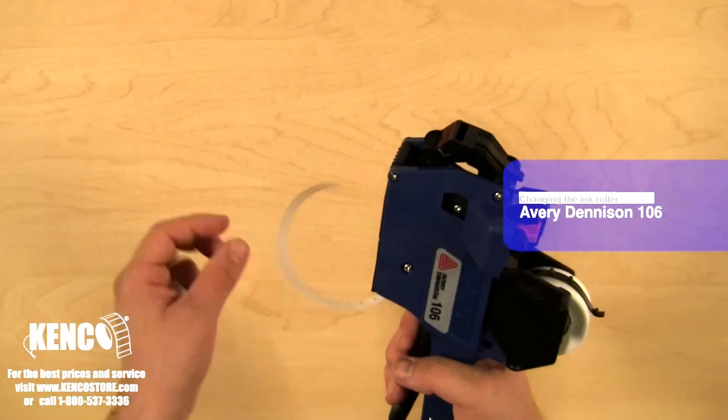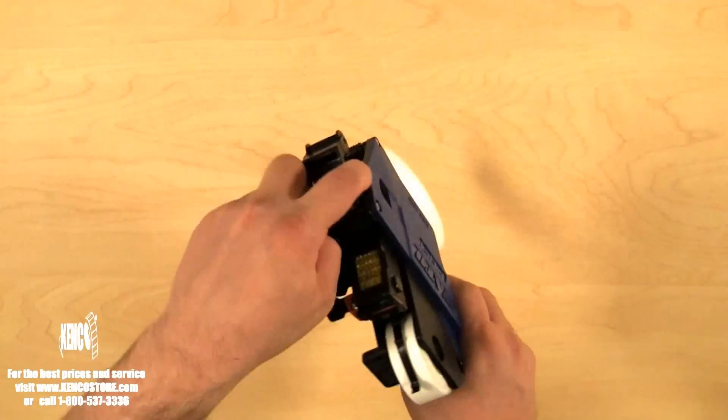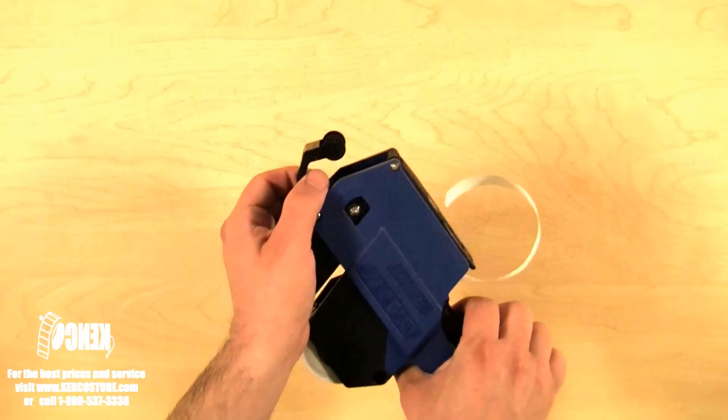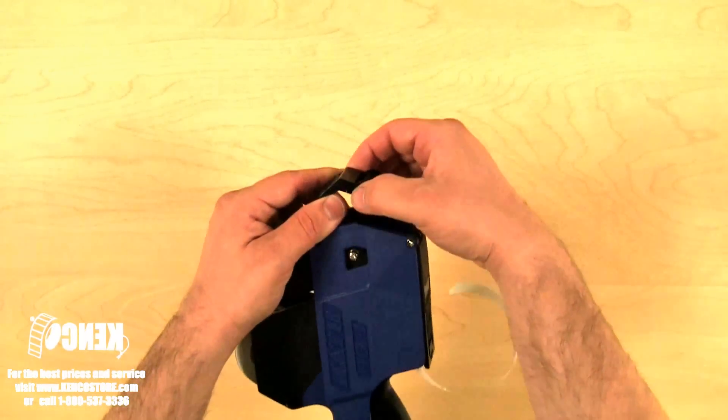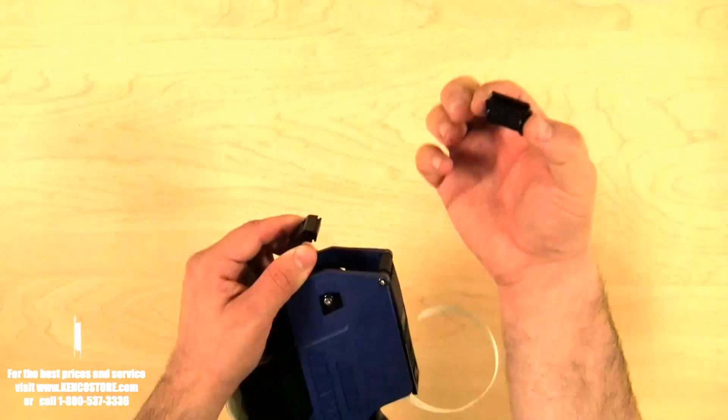To change the ink roller, we will squeeze the trigger and lift up. Then we slide the ink roller off.